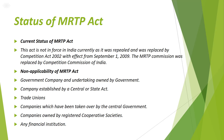So the MRTP Act provides for registration of certain agreements with the Director General. Under the MRTP Act, companies and traders have to get their agreements registered. The authority below the Director General is the MRTP Commission. The MRTP Commission is empowered to conduct inquiry and investigation and pass final orders in respect of RTPs (restrictive trade practices) and UTPs (unfair trade practices). The Commission investigates and then decides whether something falls under restrictive trade practice or unfair trade practice.